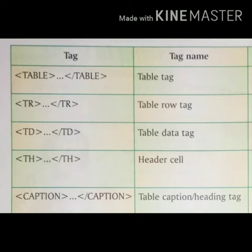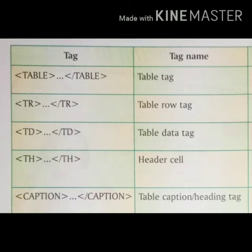We know that we use HTML language to design web pages. First, table and slash table — this is the main tag used to insert or define a table in a document. Secondly, tr and slash tr — the table row tag which is used to define a horizontal row or a cell. Td and slash td — this is table data, which is used to enter or insert data in a cell.